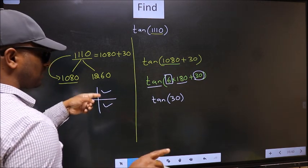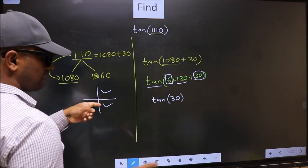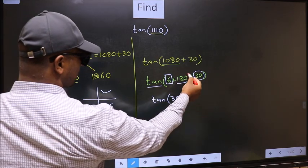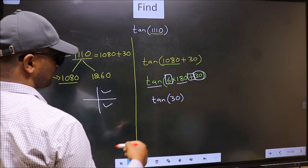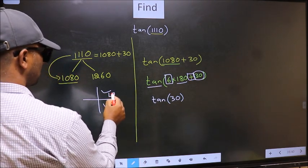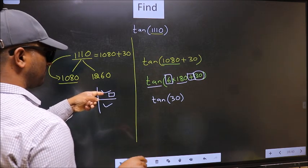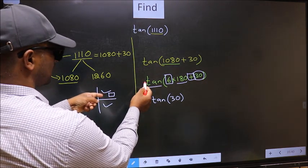So now to select the quadrant, we should look at this symbol. Here we have plus. That means angle lies in the first quadrant. And in the first quadrant, tan is positive.